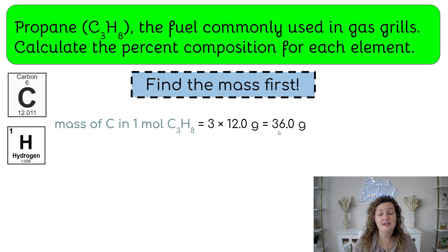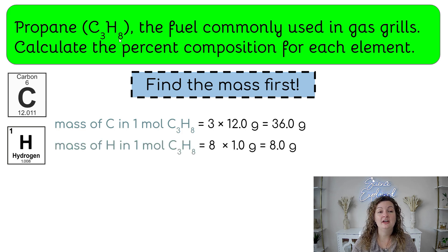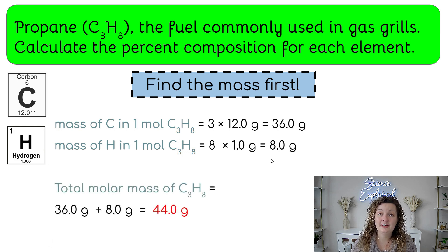Next one, we're going to look at hydrogen. We have eight hydrogen, and we're going to multiply that by the number off the periodic table, which is one. So we end up getting eight grams for hydrogen. Well, if we add those together, we end up getting our molar mass of our compound. So we're going to do 36 grams plus eight grams, and that gives us 44 grams.